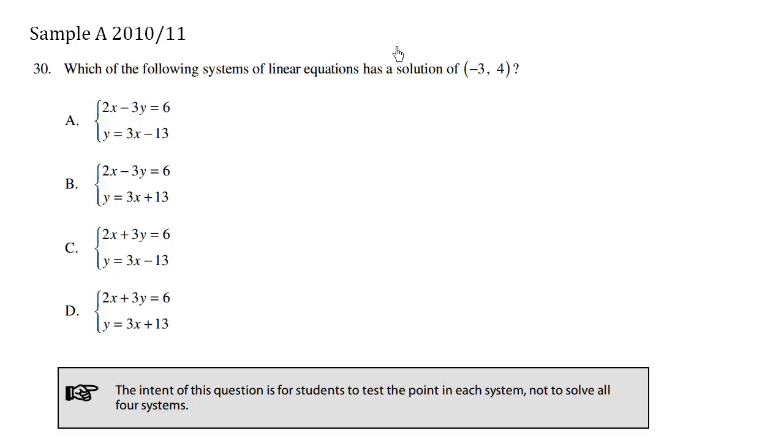So the fastest way would be to simply, since we're given the point - the solution being the point where the two lines actually intersect - we just have to plug it in. Plug in this point into these different linear equations and see if it actually satisfies the left side equals right side. So let's work these out.